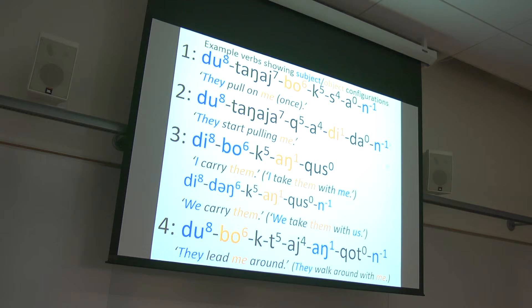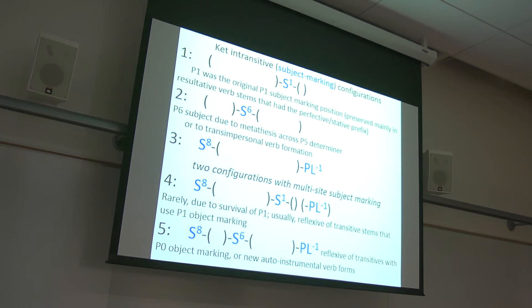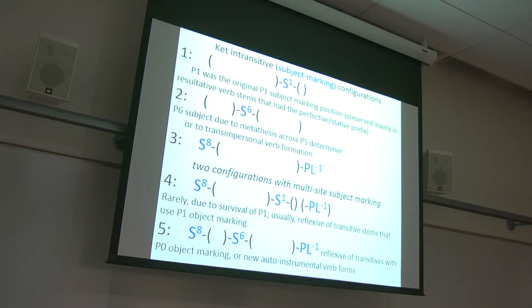Here are example verbs. Very often you have almost synonymous verbs that belong to different conjugations, because the reasons for the different conjugations are historical accidents caused by sound changes and metathesis, not by a meaning system like semantic alignment. Ket is not a language that has semantic alignment. You would have to study the history of the language to understand why a particular verb belongs to intransitive configuration one or four or five. For instance, 'I have a dog' is one conjugation, and 'I have a cat' is another — there's no logical or spiritual reason for that. It's just a historical accident of how the language developed.